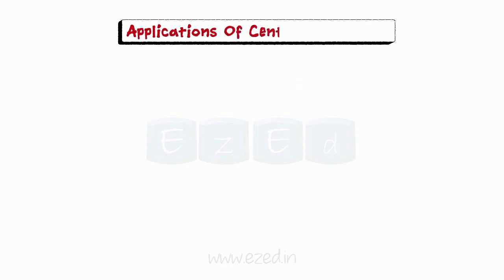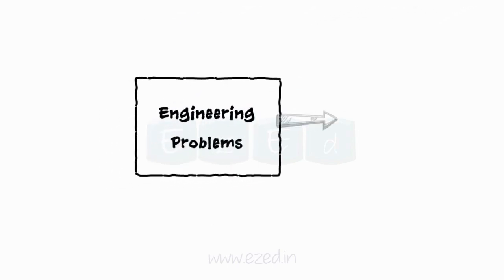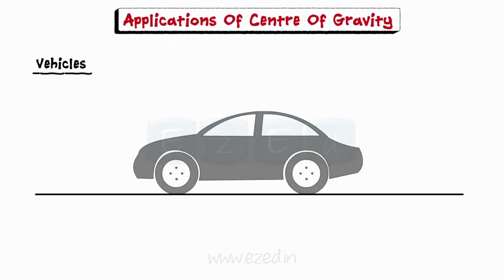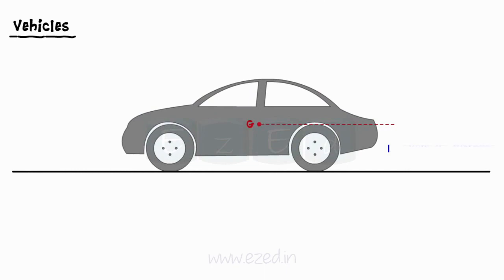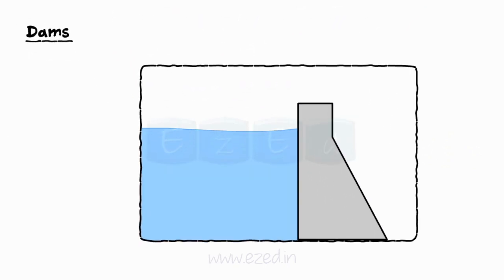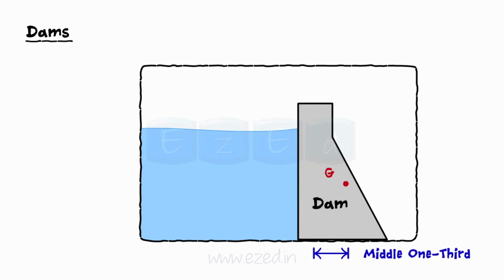Now we will learn about some applications of center of gravity. In order to analyze certain engineering problems, we must find the location of center of gravity. Any vehicle should be designed in such a way that its center of gravity is at a minimum distance from the ground, so that tipping of vehicles is avoided while driving across curved roads at high speed. A dam is a structure built across a river to store water. A dam is designed so that the center of gravity lies within the middle one-third of the base of the dam. If the center of gravity goes beyond the middle one-third, the dam may lose its stability and collapse.